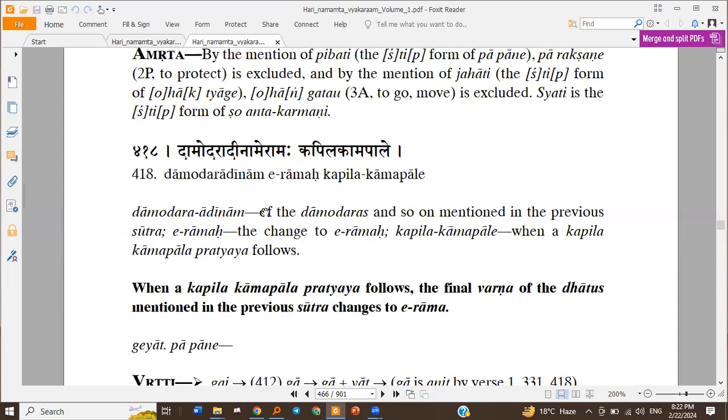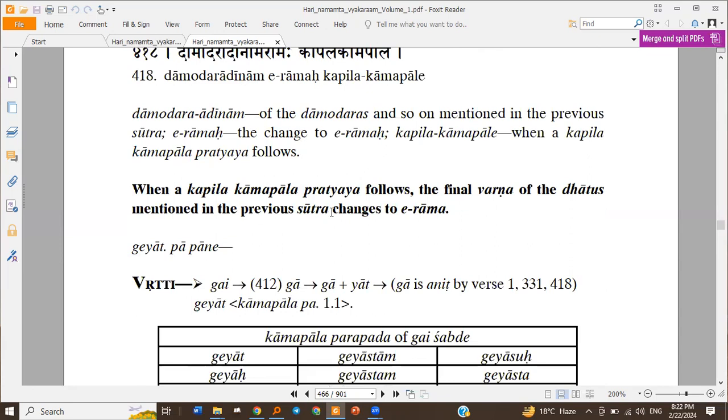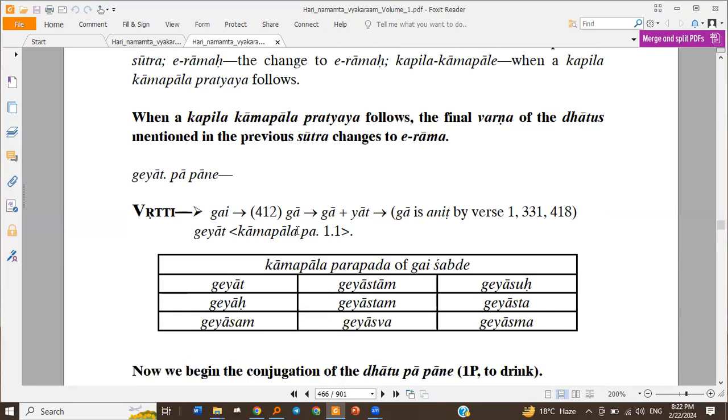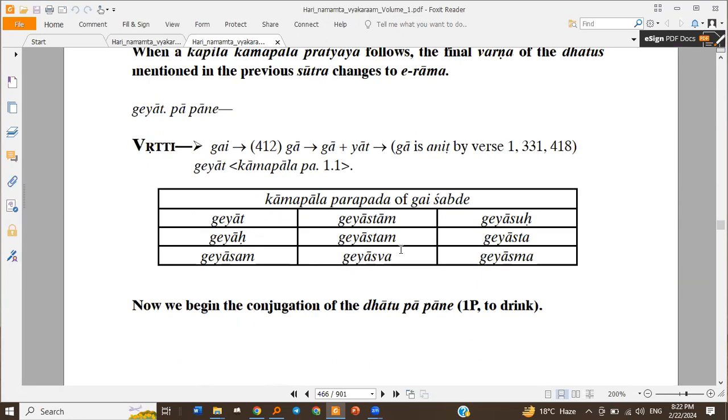Then Damodara Adhinami Ramaha Kapila Kamapale - when a Kapila Kamapale pratyaya follows, the final verna of the Dhatus mentioned in the previous Sutra changes to A. And here for the Dhatus mentioned in the previous Sutra, the Aarama becomes A when we have Kapila Kamapale pratyaya following. So we get Giyate Giyastam Hityali.